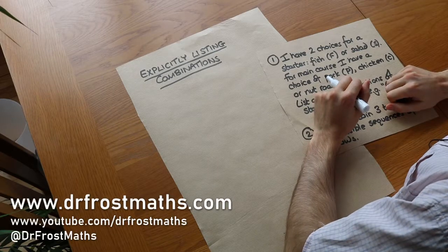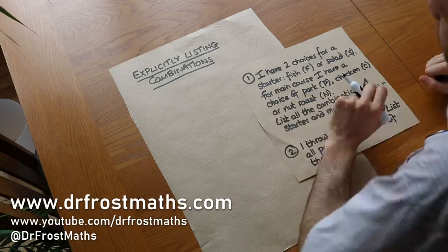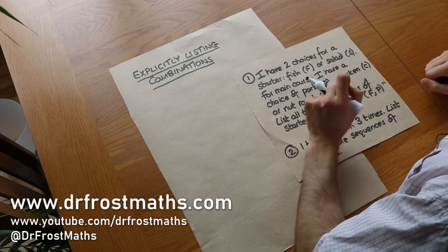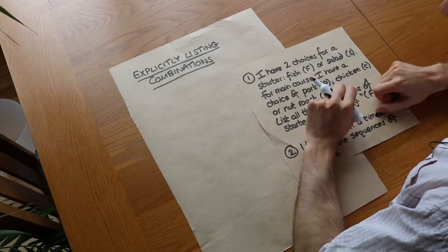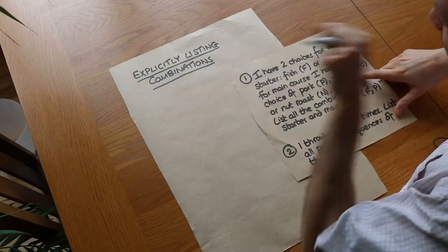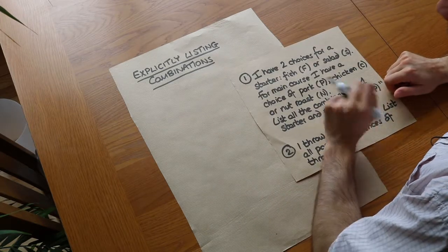Hello and welcome to this video on explicitly listing combinations. In another video we looked at how we can use multiplication to work out the total number of combinations of doing certain things. But sometimes I actually want you to list out all the possibilities explicitly.